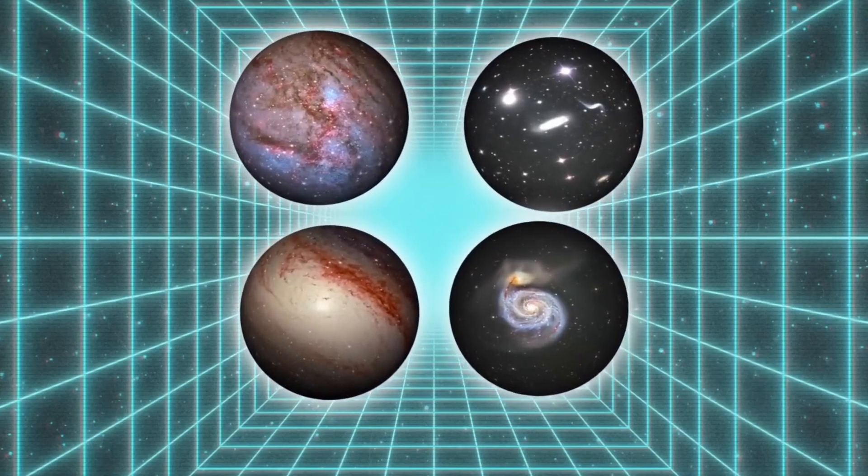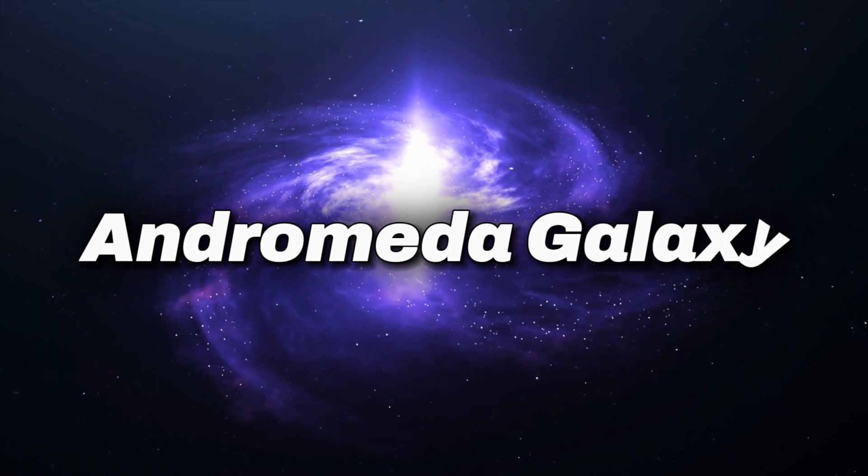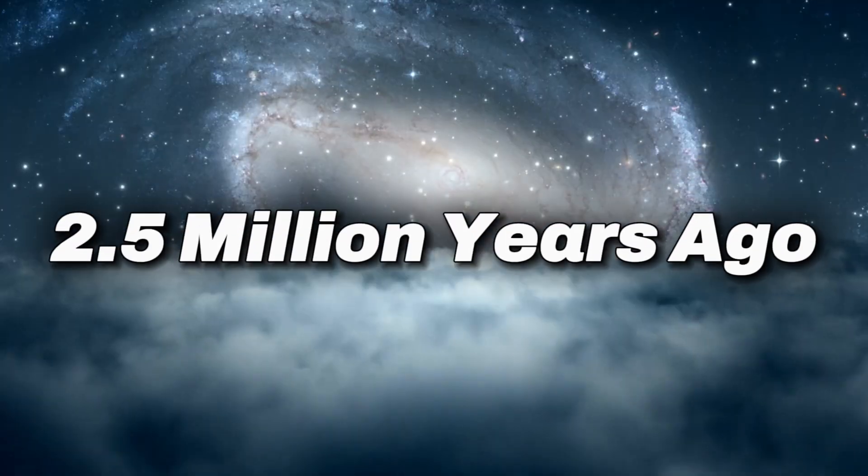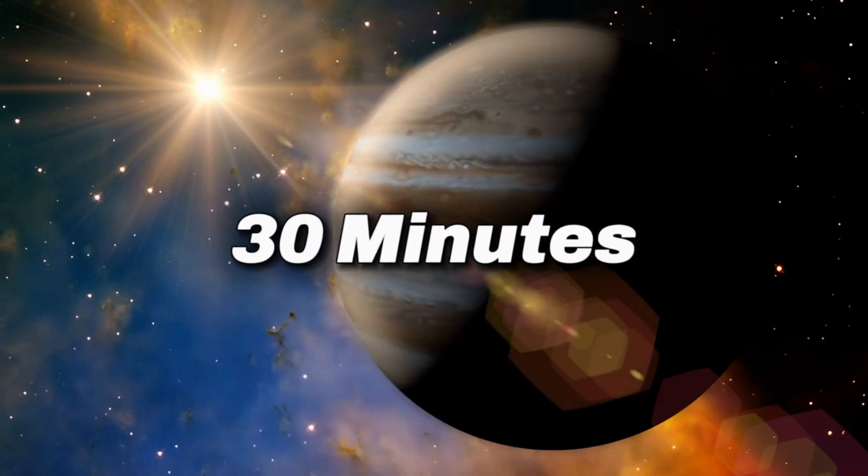The most distant objects in the universe are also the most ancient. When we look at the Andromeda galaxy, we're seeing as it was 2.5 million years ago. Reflection of sunlight off of Jupiter takes 30 minutes to reach us.